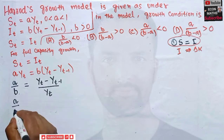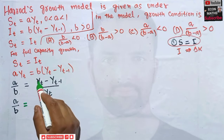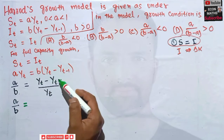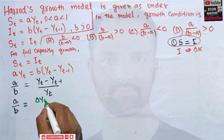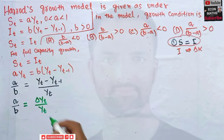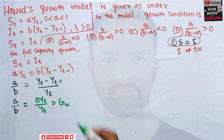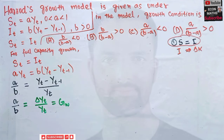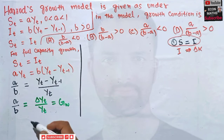Now, (Y_t - Y_{t-1}) represents GDP in the current year minus GDP in the preceding year, and dividing that difference by Y_t gives us ΔY_t / Y_t, which shows the growth — specifically, the warranted growth in the Harrod-Domar model. So the warranted growth rate g = a/b.